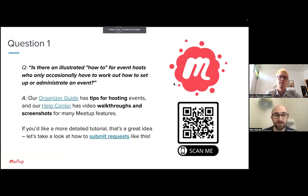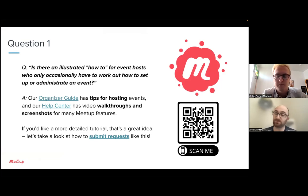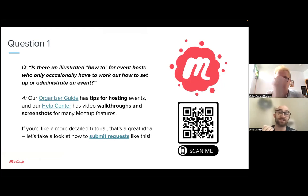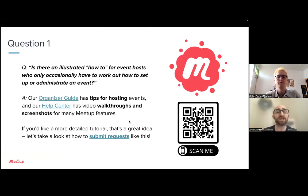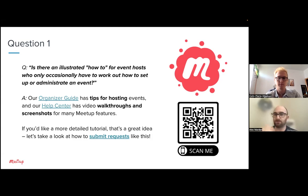So we've got the organizer guide and the Help Center. If you'd like a more detailed tutorial about hosting events, that's a great idea to submit as a feature request — either built directly into Meetup or set up in the blog or Help Center. If you've got ideas for resources like this illustrated how-to guide and you're not seeing them anywhere, you can submit a feature request to our team. We process them and try to address them in time with our different rollouts and updates.